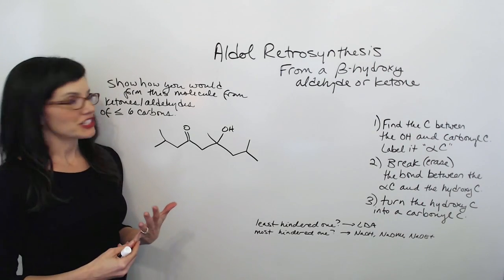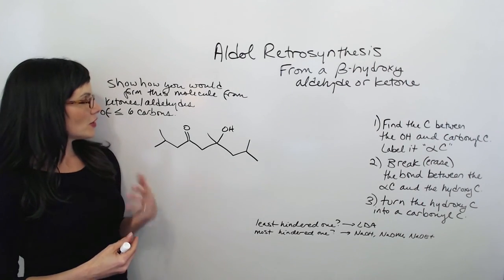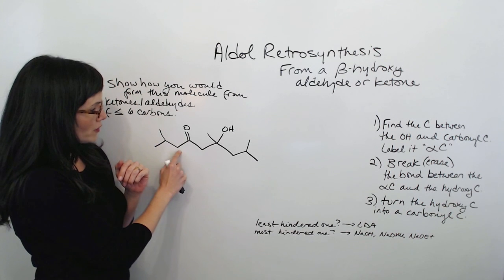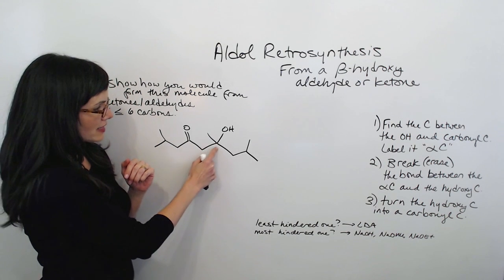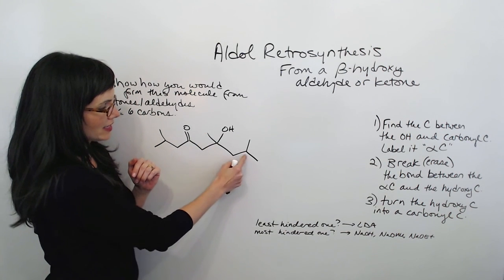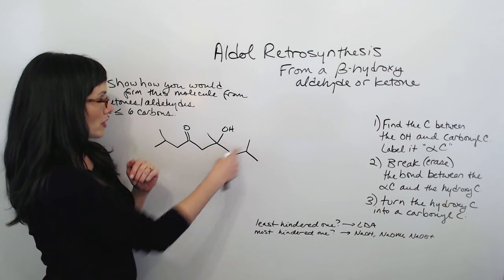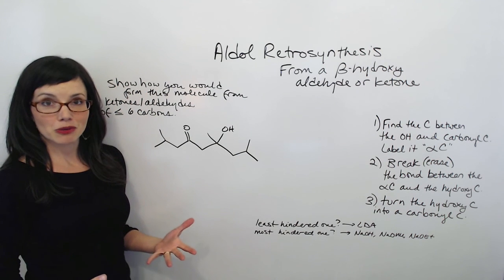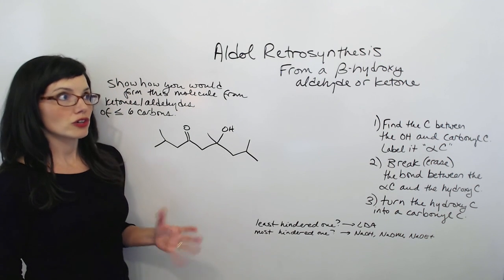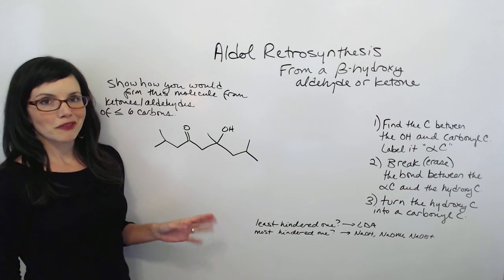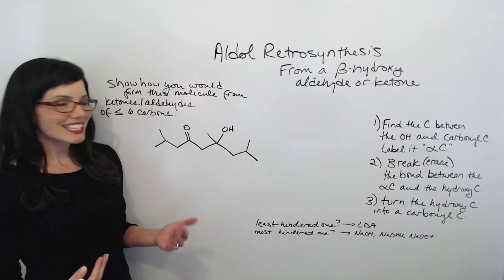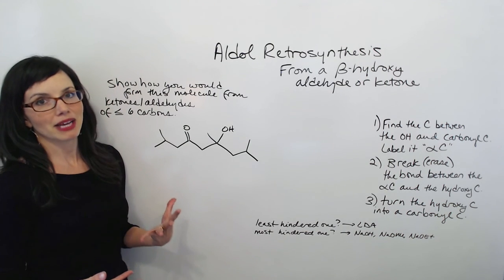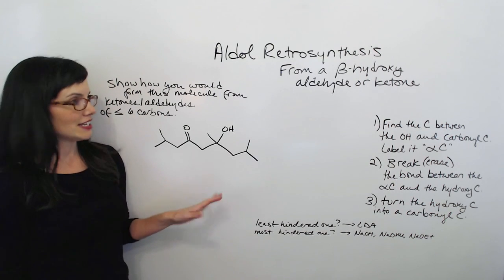Here's the second example. We've got 12 carbons, and thankfully we've got six-carbon molecules to work with — 12 divided by 2 is 6. So we know we're going to be able to divide this in half, and that's fantastic. We can go ahead and work through these same steps.